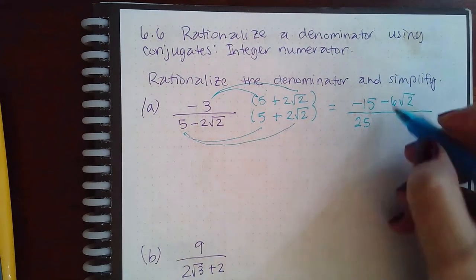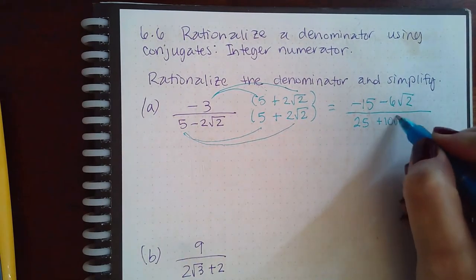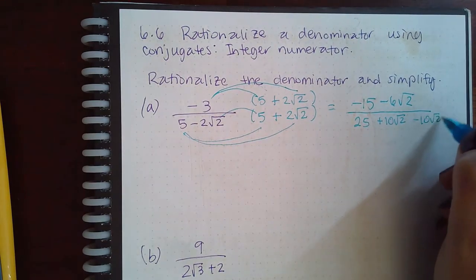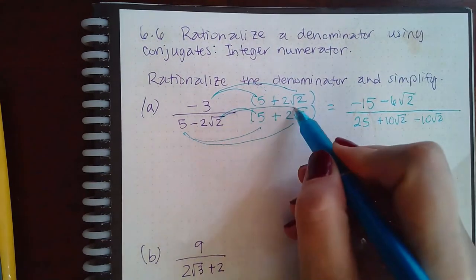5 times 2 square root of 2 is positive 10 square root of 2. Then negative, so negative 10 square root of 2. And then finally this times this...